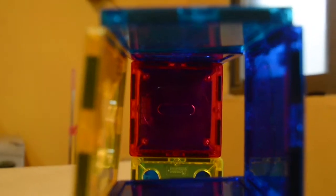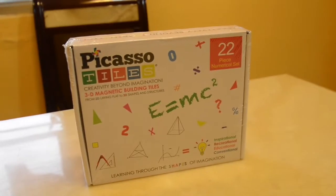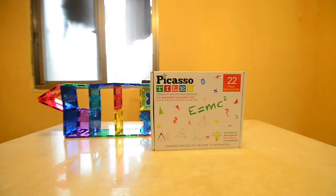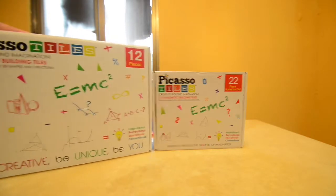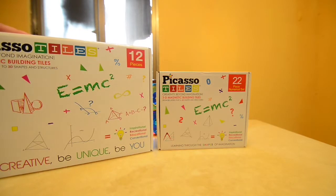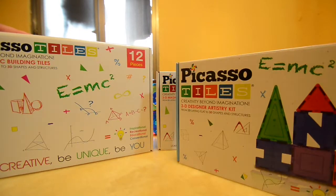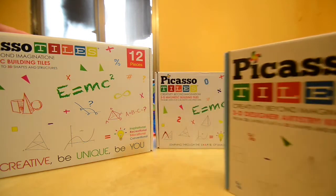And what Picasso Tiles can really do is engage them with colors, shapes, building, construction, architecture even. And what's awesome about the 22 piece set is that it perfectly goes along with the 12 piece set, let's say. Or, for example, if you had the 33 piece set. All of them work in cohesion.